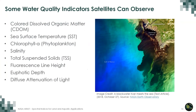In addition to suspended sediments and colored dissolved organic matter or CDOM, other water quality indicators that satellites can observe or derive include sea surface temperature, chlorophyll, salinity, the diffuse attenuation of light known as KD, the vertical attenuation coefficient at 490 nanometers (KD490), and the euphotic depth, which is where light attenuates to about 1% of the amount found at the water surface.